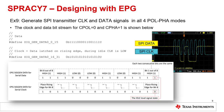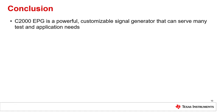In the application report Designing with the EPG, a user is given step-by-step instructions on how to generate SPI transmitter clock and data signals in all four polarity and phase modes. Example software, block diagrams showcasing the overview of the design, and oscilloscope signal captures are available in the application report. In conclusion, the C2000 EPG is a powerful, customizable signal generator that can serve many test and application needs. Thank you for watching, and I hope this presentation has been beneficial to you.